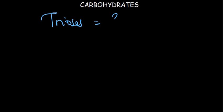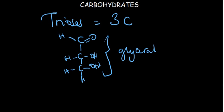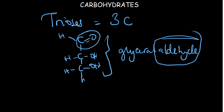Trioses have three carbon atoms in them. We have three types of trioses. The first is glyceraldehyde — it has an aldehyde functional group because the carbonyl group is on carbon number one, and it has three carbons, which makes it a triose.